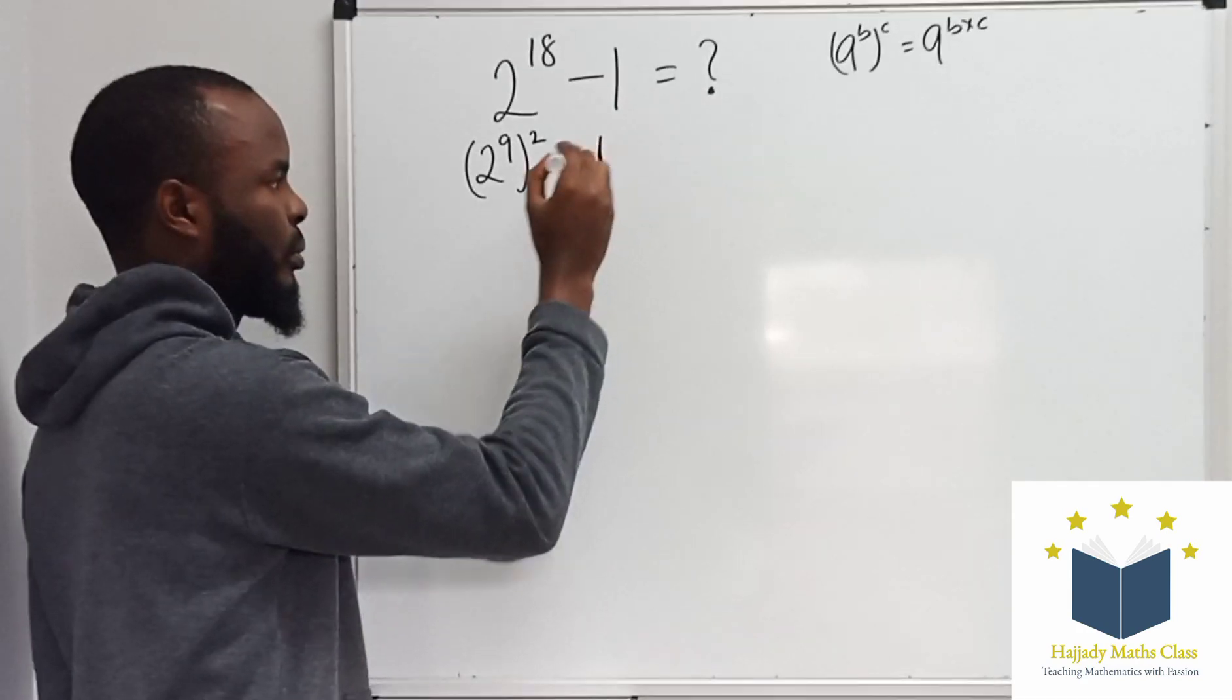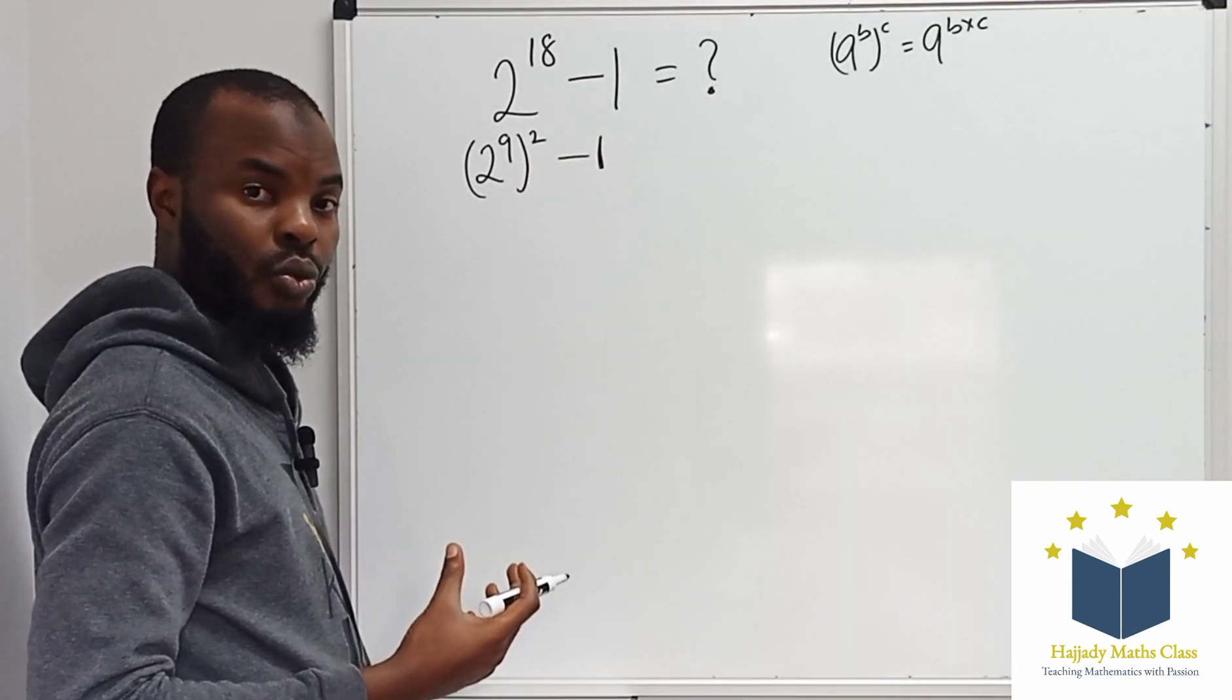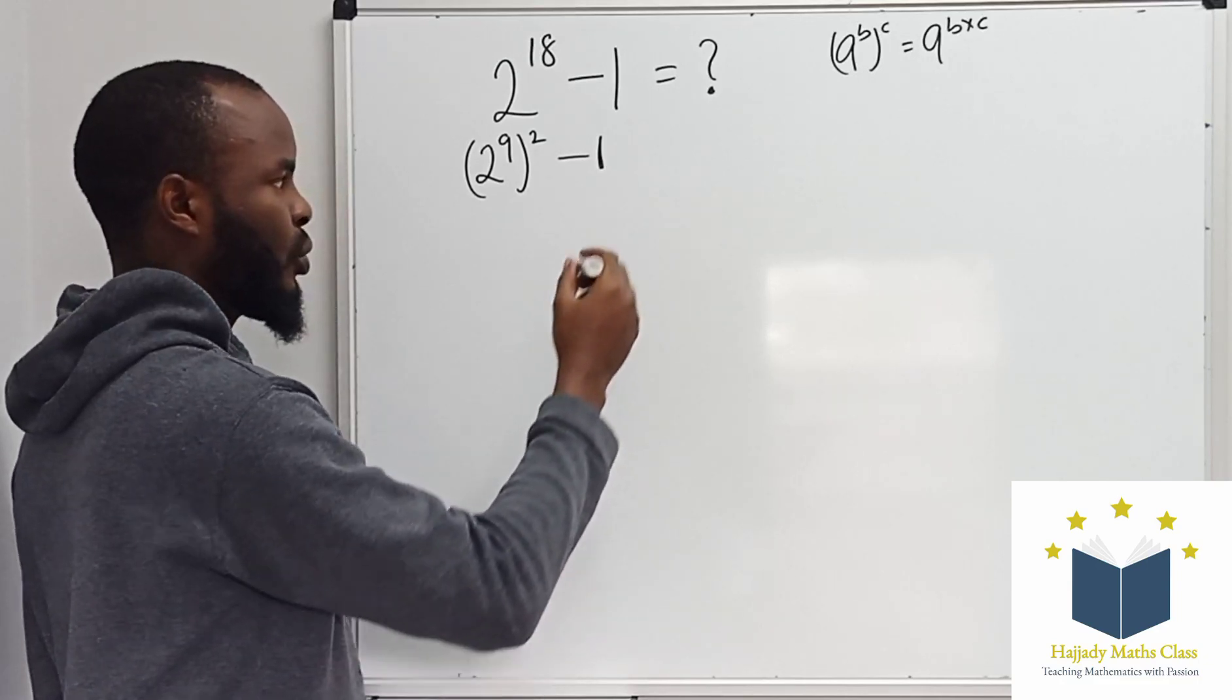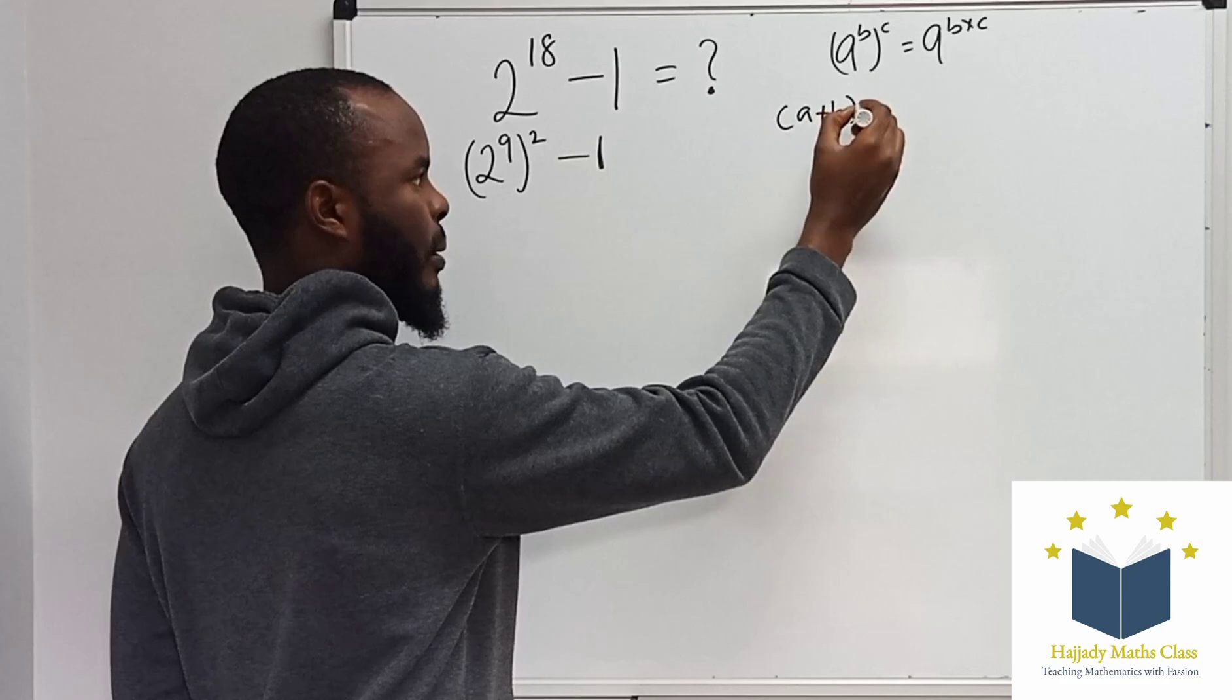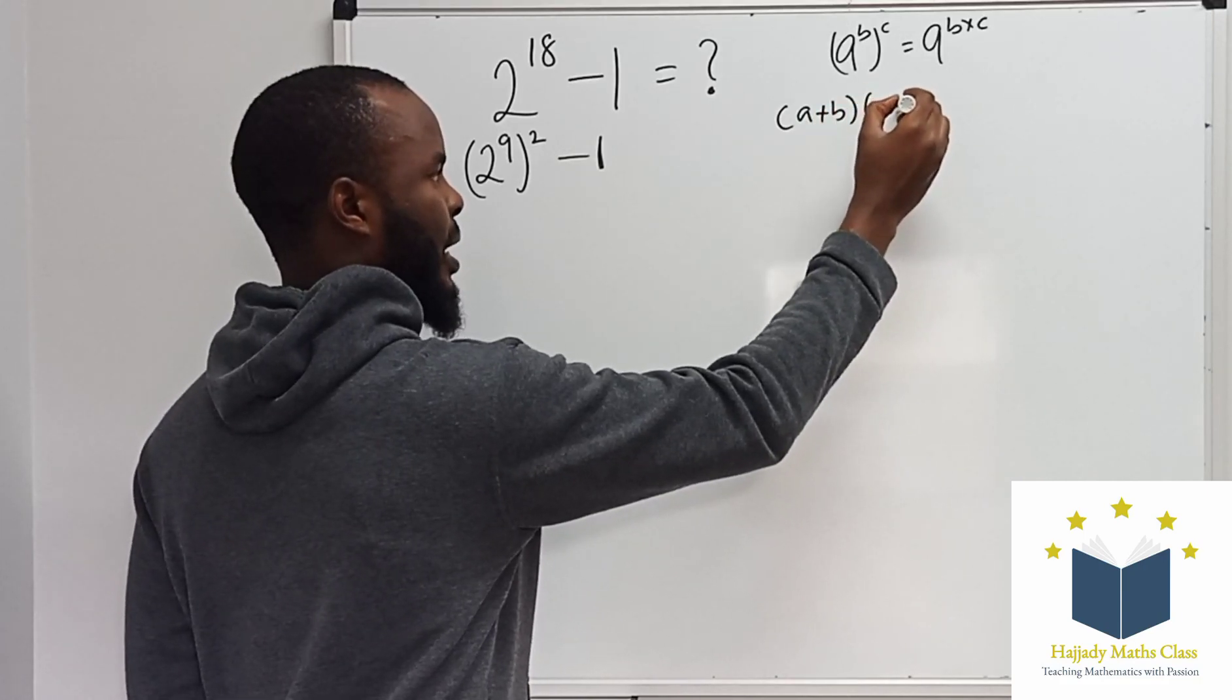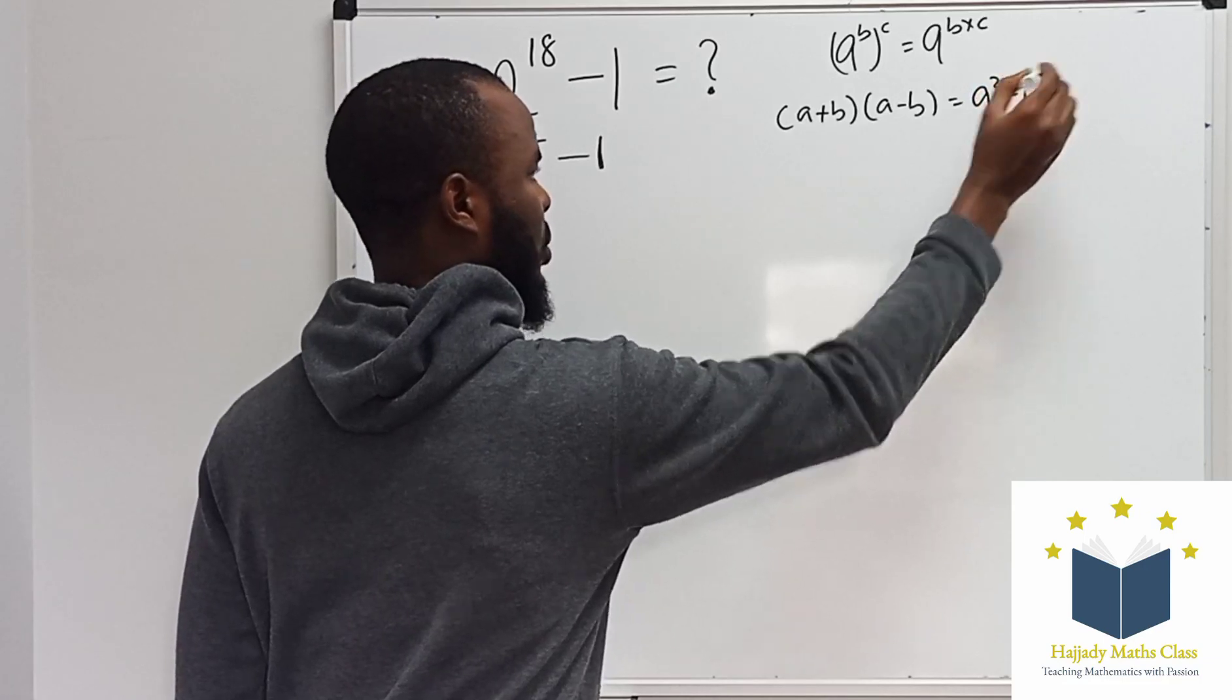Minus 1. Then I'm going to use what is known as the difference of 2 squares. Now, using the difference of 2 squares, the rule says that when you have A plus B times A minus B, this is the same thing as A squared minus B squared.